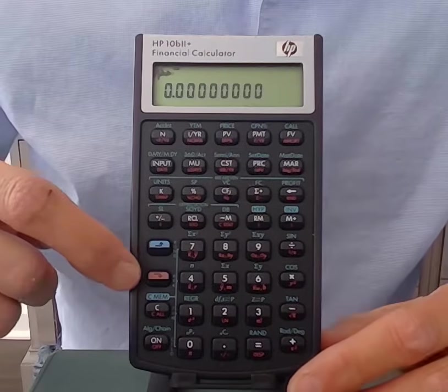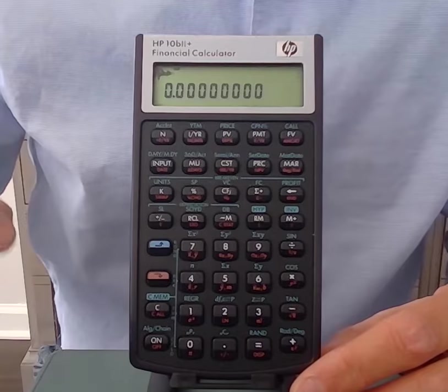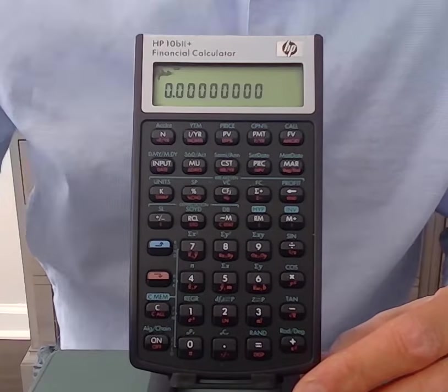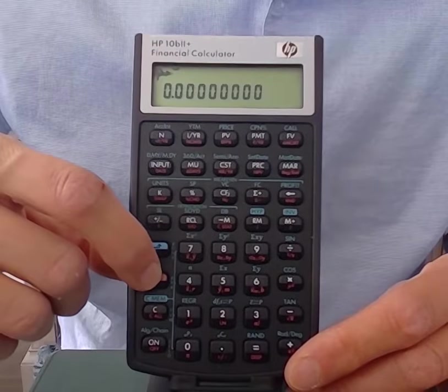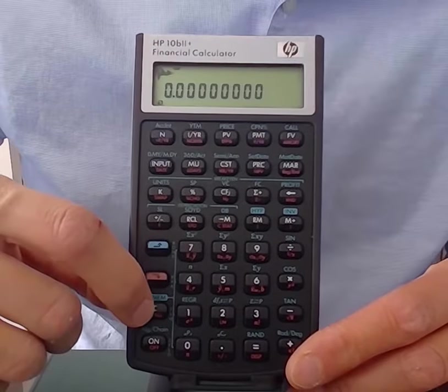Next, we want to make sure the calculator is set to one period per year. To check what its period per year setting is, we'll press the shift button again, and then the C below it.